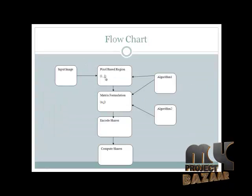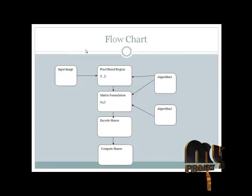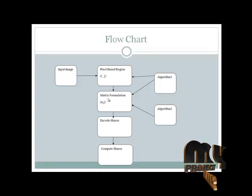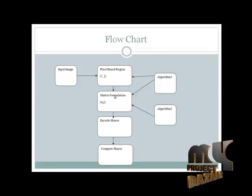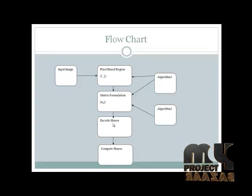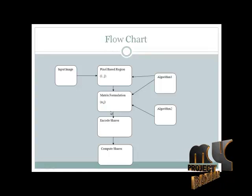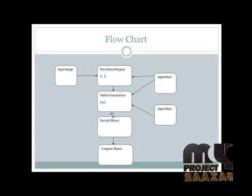Let us see the diagram. This is the flowchart: input images go into the pixel-based region. The pixel-based region feeds into Algorithm 1 steps and the matrix formation. The matrix formation generates Algorithm 1 and Algorithm 2 outputs. The matrix formation images derive into the encoding shares, which are split into matrix formation regions — for example, 2x2 and 3x3.